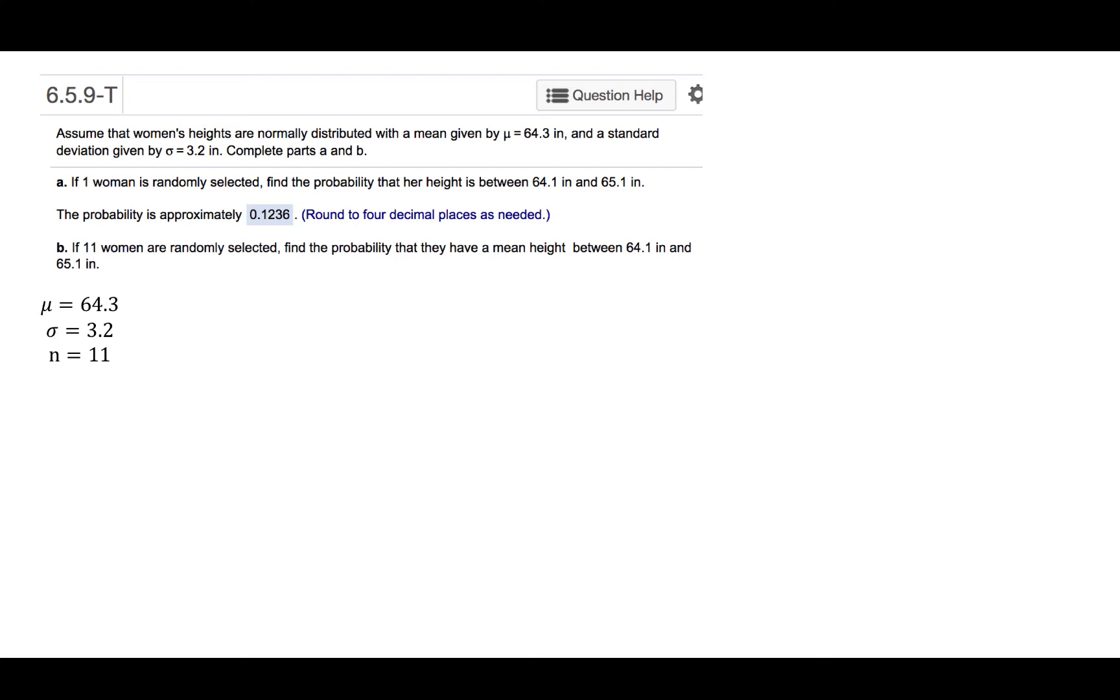In part A we're only working with one individual data value from the population. In order to find these probabilities, we will calculate a z-score. In part A, the z-calculation will just be x minus mu over sigma since we're only talking about one individual data value from the population.